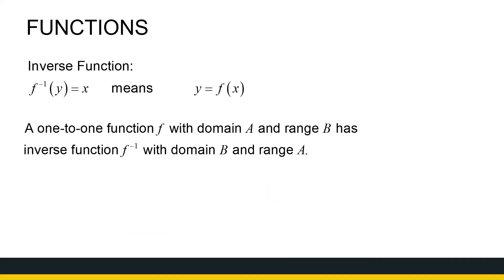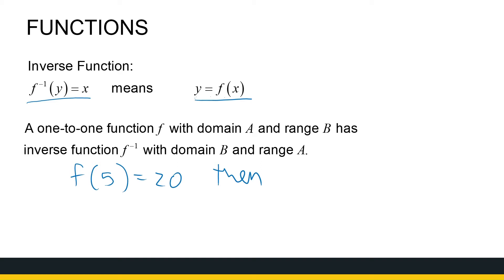Now we can define what the inverse is. The inverse function f⁻¹(y) — take note, it's not an exponent; it doesn't mean to the power of minus one. It's an unfortunate but commonly used notation. f⁻¹(y) = x is true when y = f(x). A one-to-one function f with domain a and range b has an inverse function f⁻¹ with domain b and range a. So if f(5) = 20 and the function is one-to-one and onto, then f⁻¹(20) = 5.